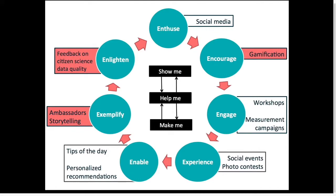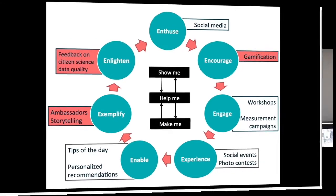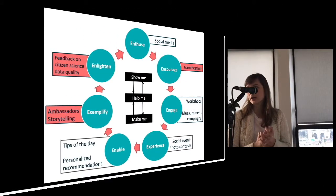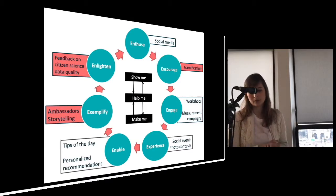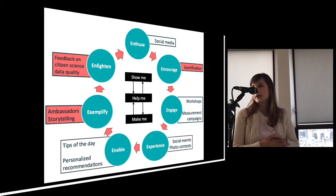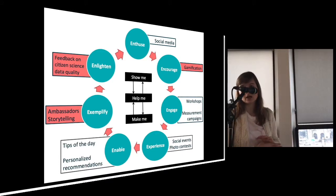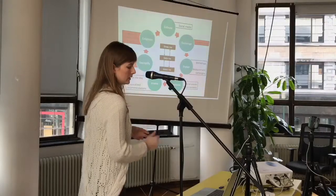Then 'enlighten' — a very important tactic — is about providing information. When citizens are involved in citizen science you also have to give them feedback about the data quality itself. In the app, for instance, this is done by a check mark: if you take a picture of the sky and it has been taken into account by the data fusion algorithm, then you get the check mark. And then 'exemplifying' is through storytelling — highlighting particular stories of users being involved in the project, something we will also do with VRT here in Brussels.